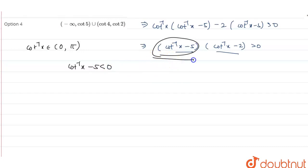So if the first term is strictly negative, the second term is also negative because then only the product is positive. So from here we can say that cot⁻¹x - 2 is also strictly less than 0.